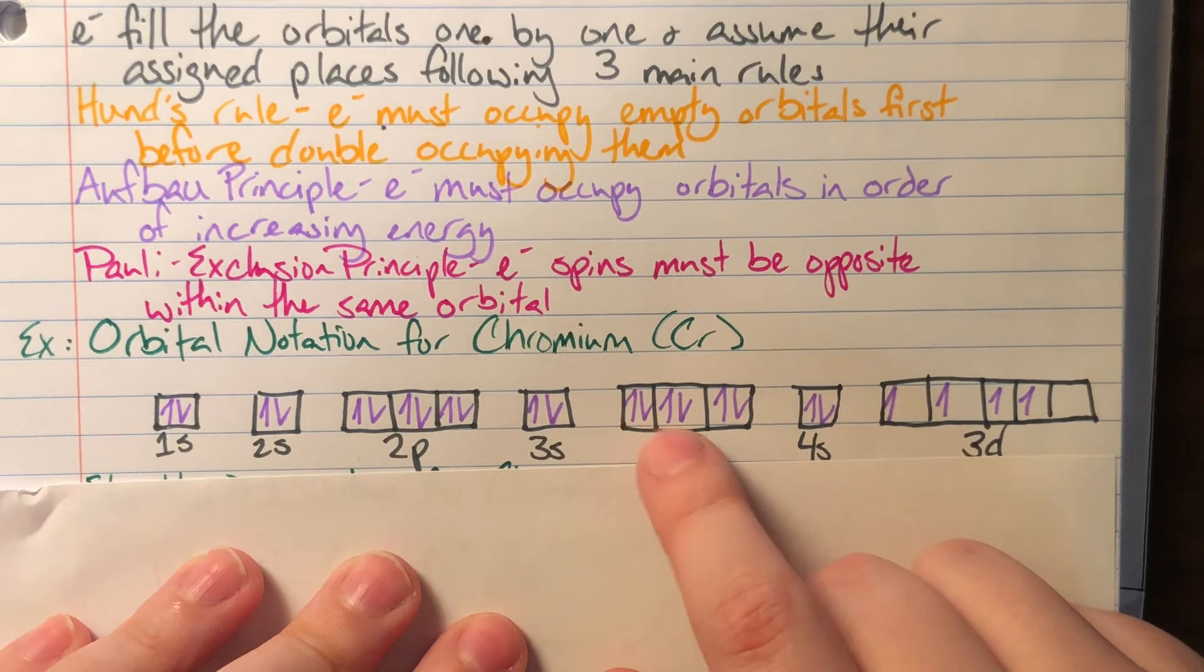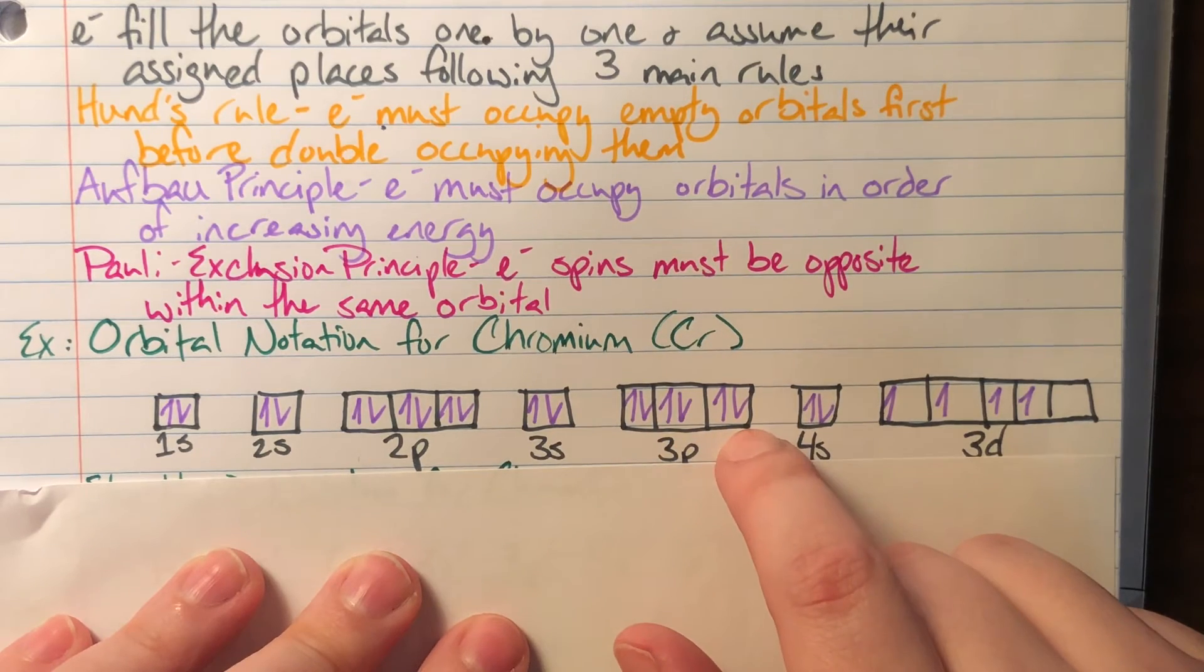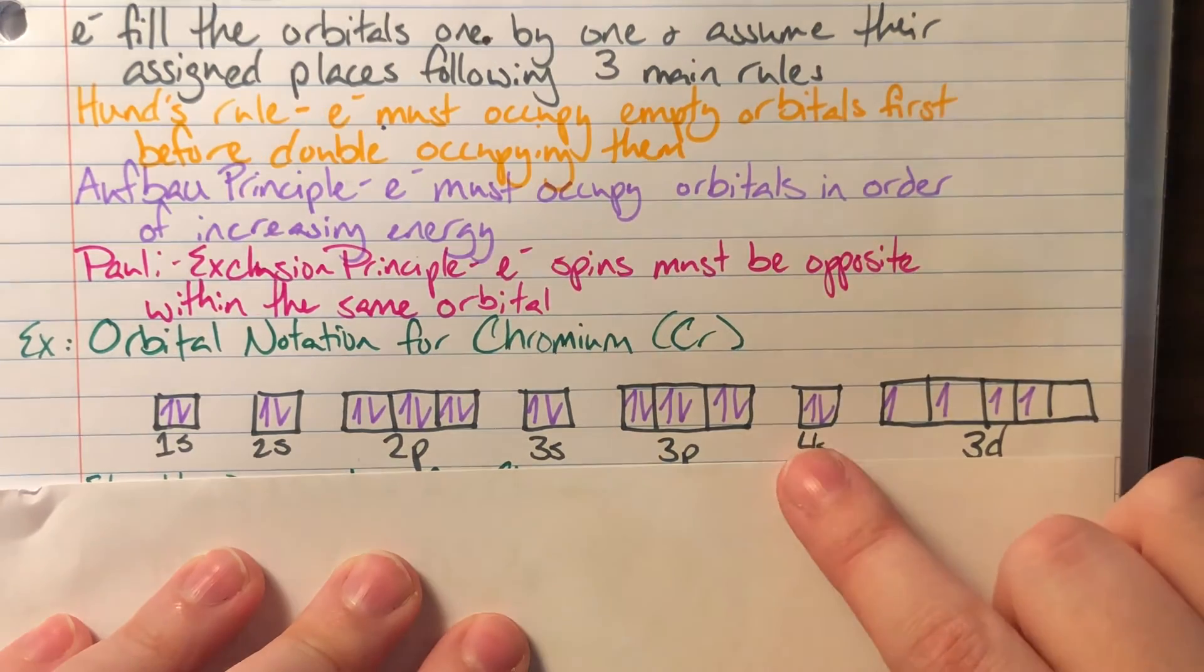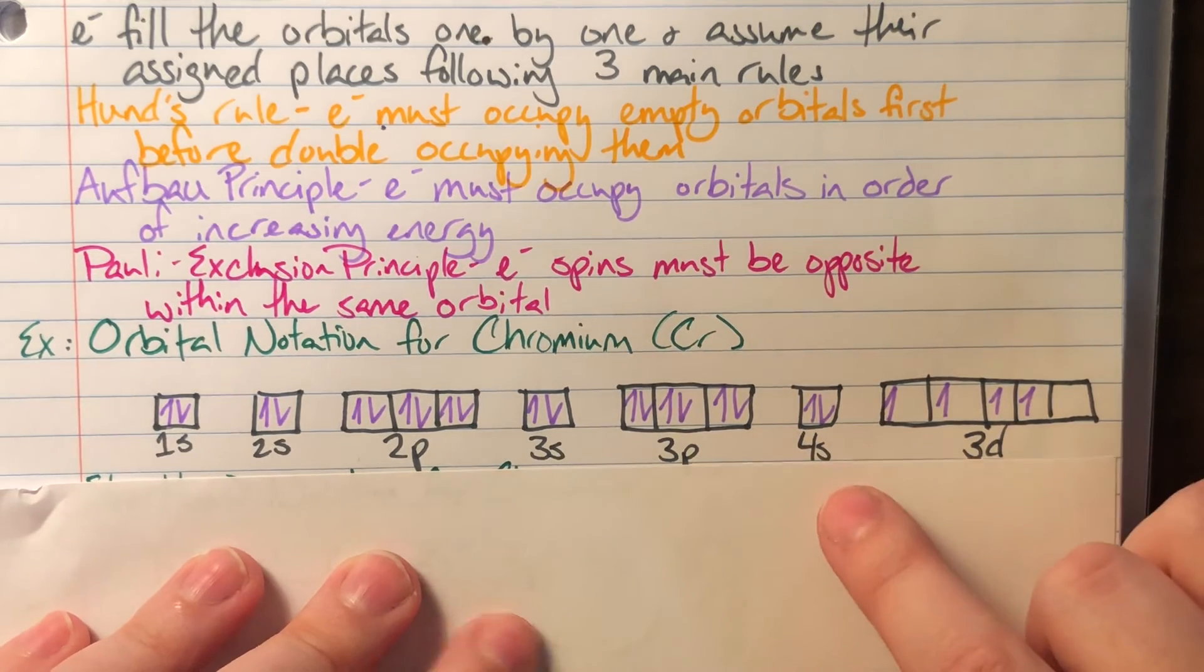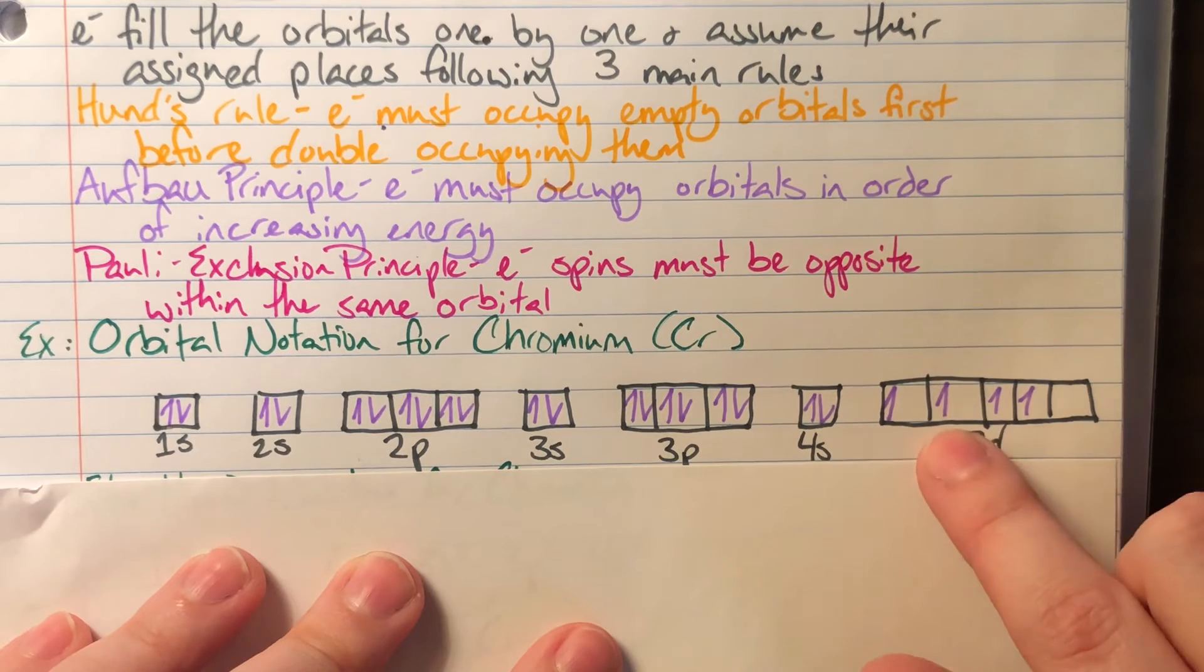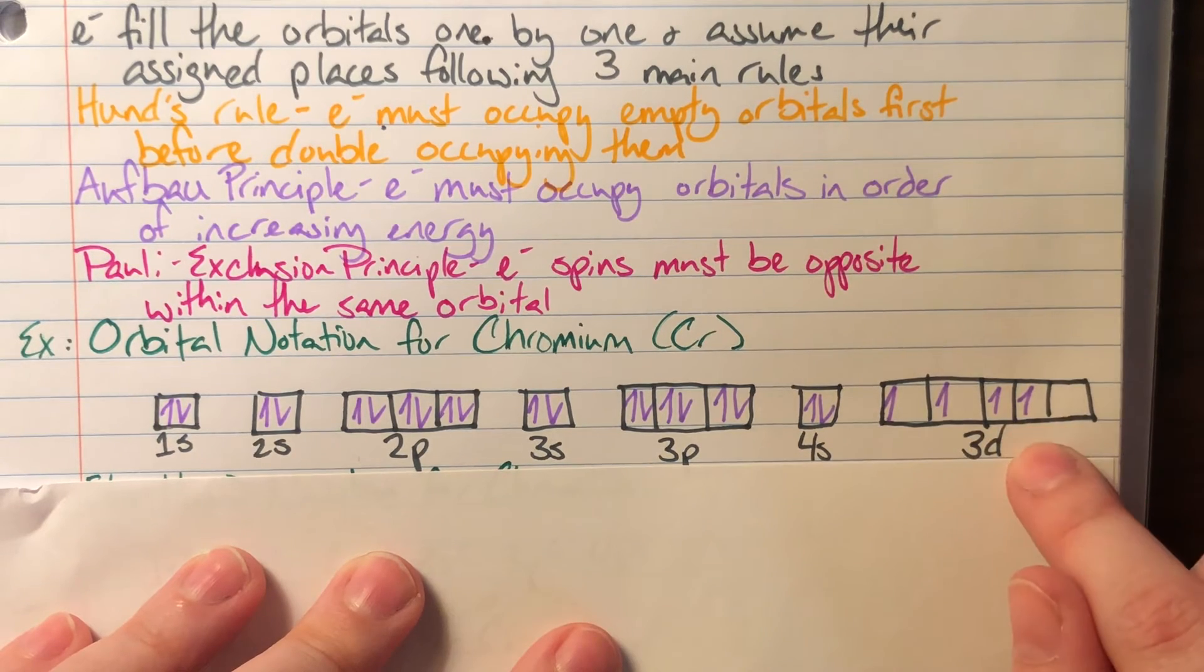My 11th and 12th electrons will live in 3s. My 13th, 14th, 15th, 16th, 17th, 18th electron will live in 3p. My 19th and my 20th will live in 4s. And then my 21st, 22nd, 23rd, and 24th electron will live in 3d.